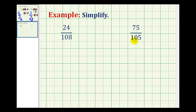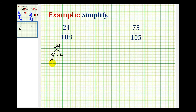We want to simplify the following fractions. A fraction is in simplest form if the numerator and denominator do not contain any common factors. Sometimes just by looking at a fraction it's hard to determine what the common factors would be. So I like to use the prime factorization method, which means we'll determine the prime factorization of the numerator and denominator, and then simplify out the common factors. We'll start by determining the prime factorization of 24 and 108, using 4 times 6. So the prime factorization of 24 would be 2 times 2 times 2 times 3.